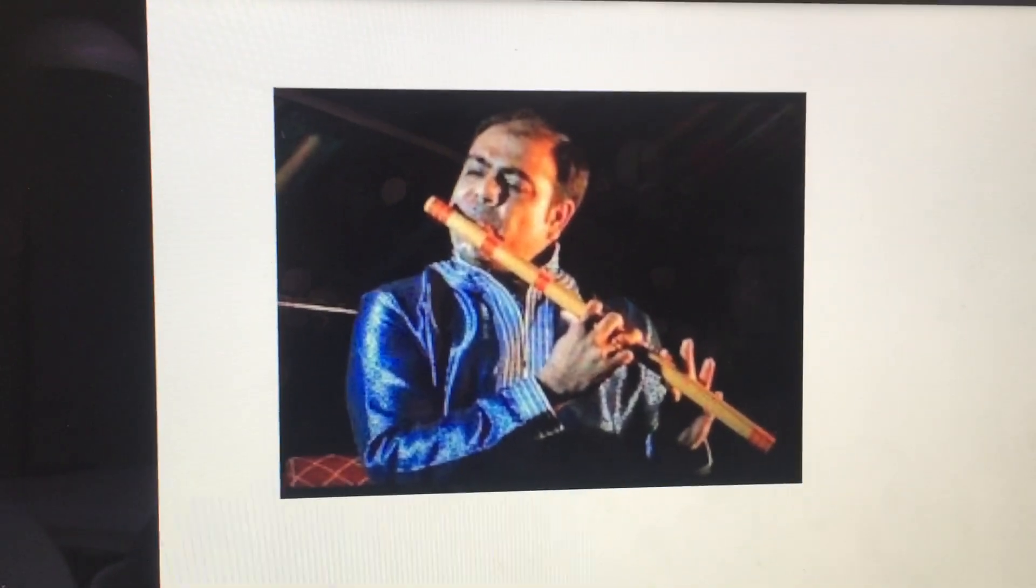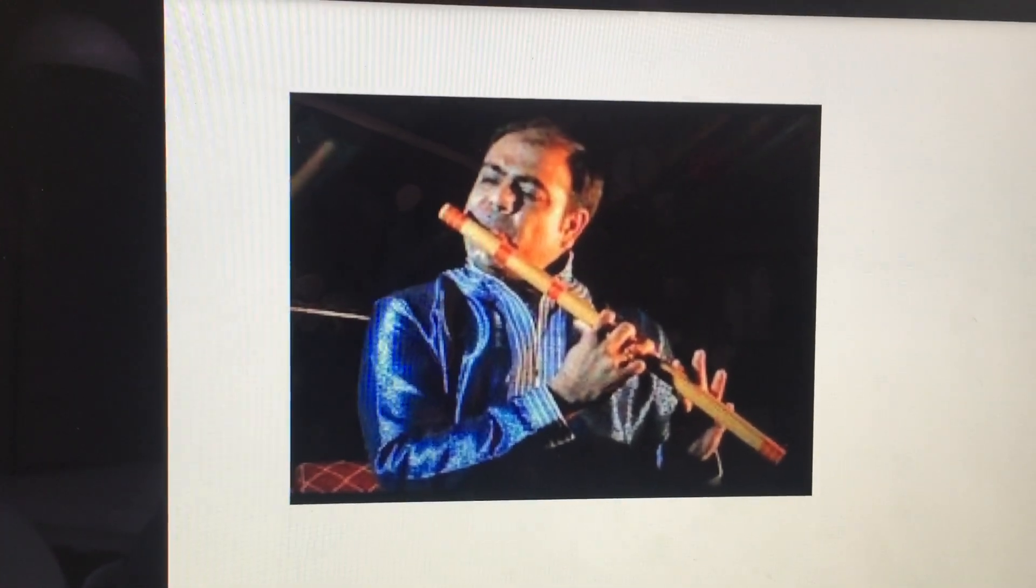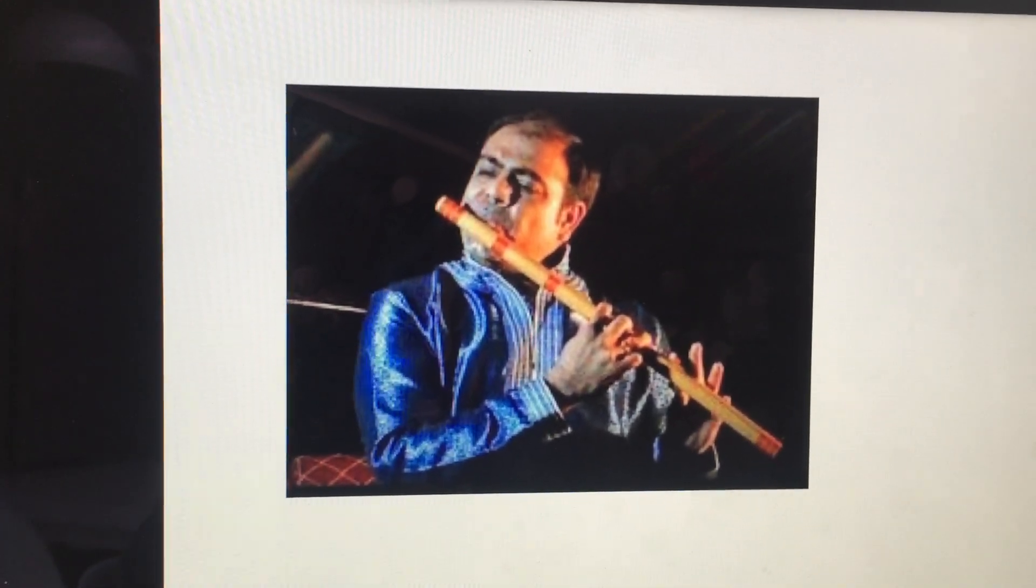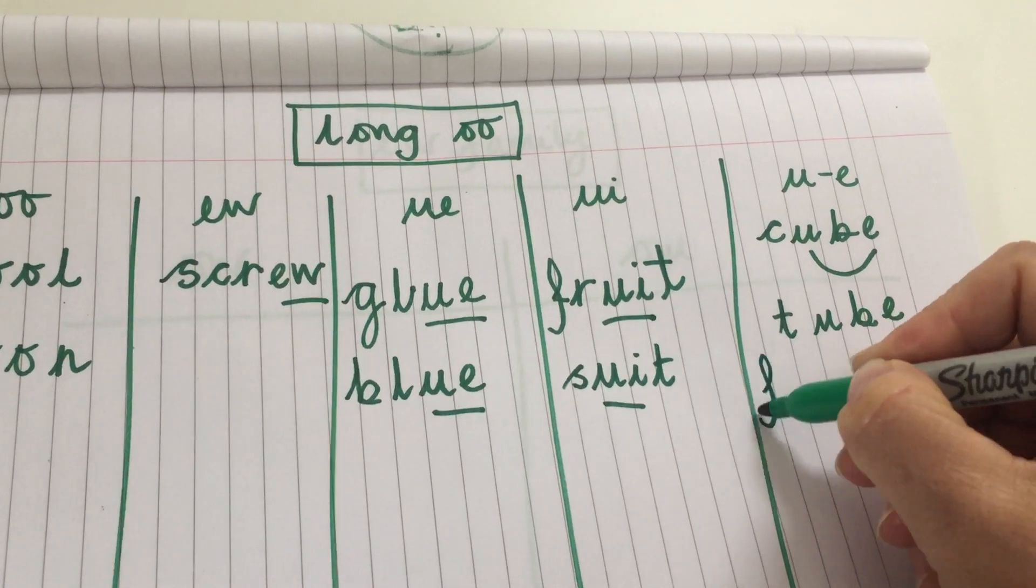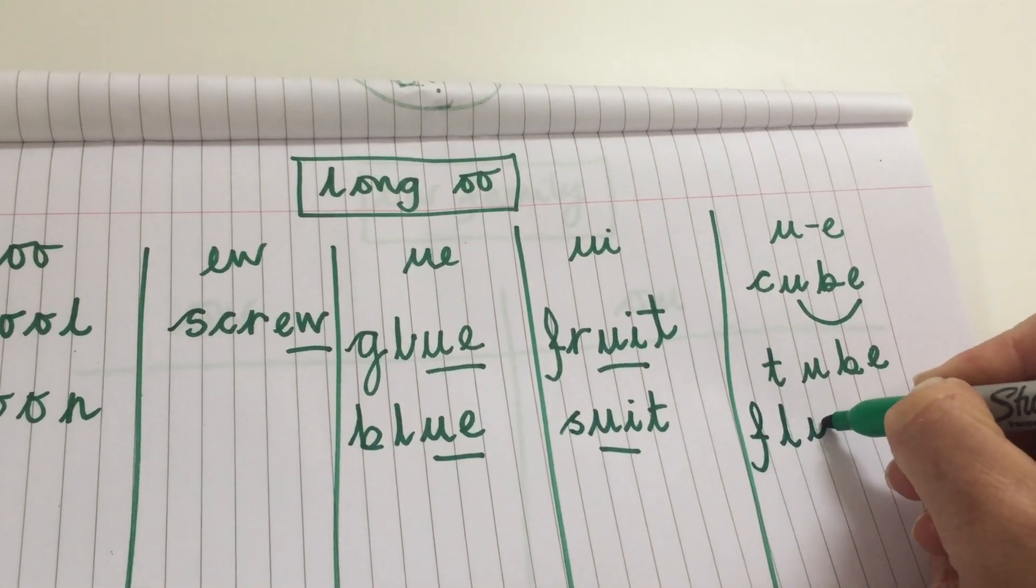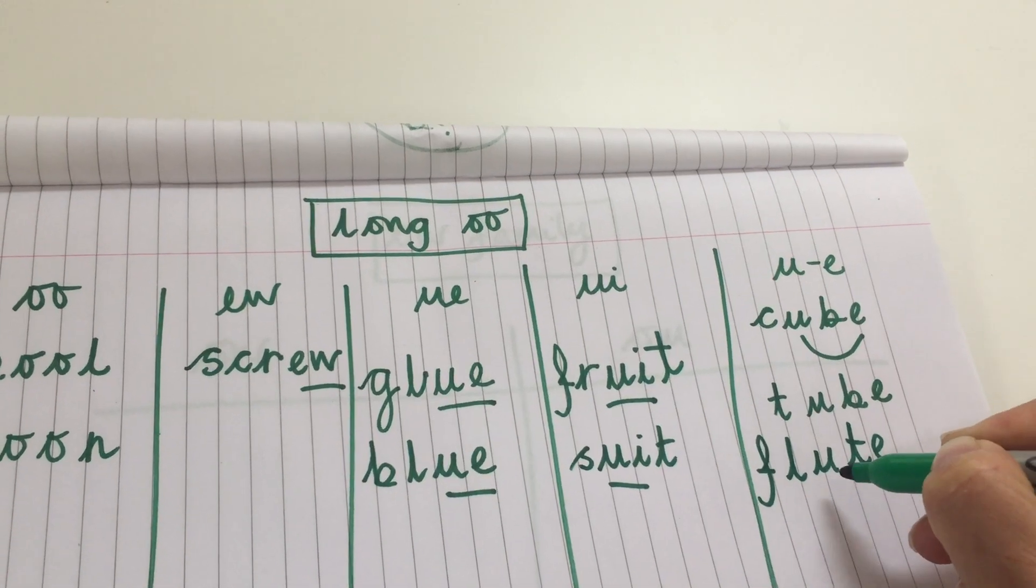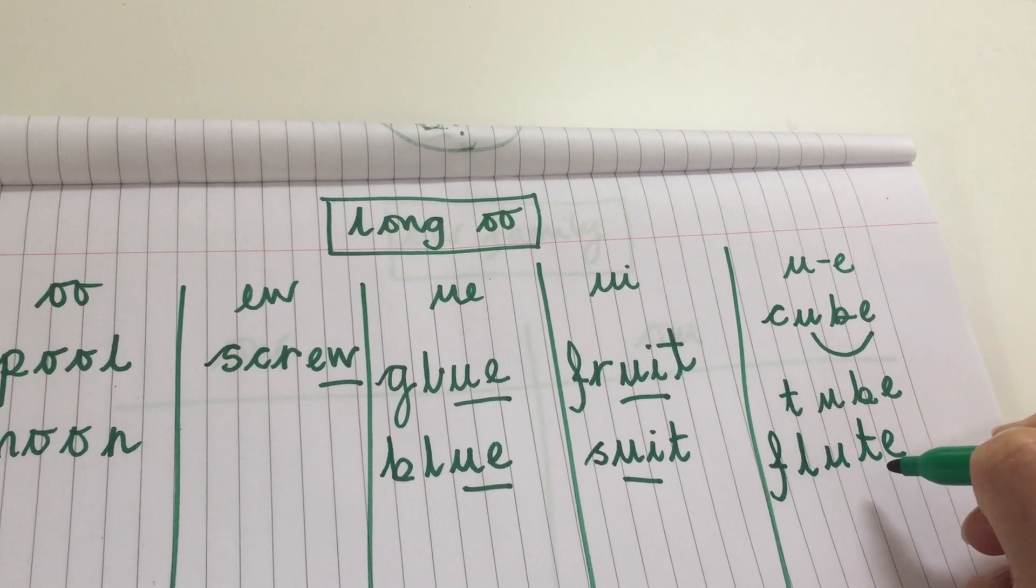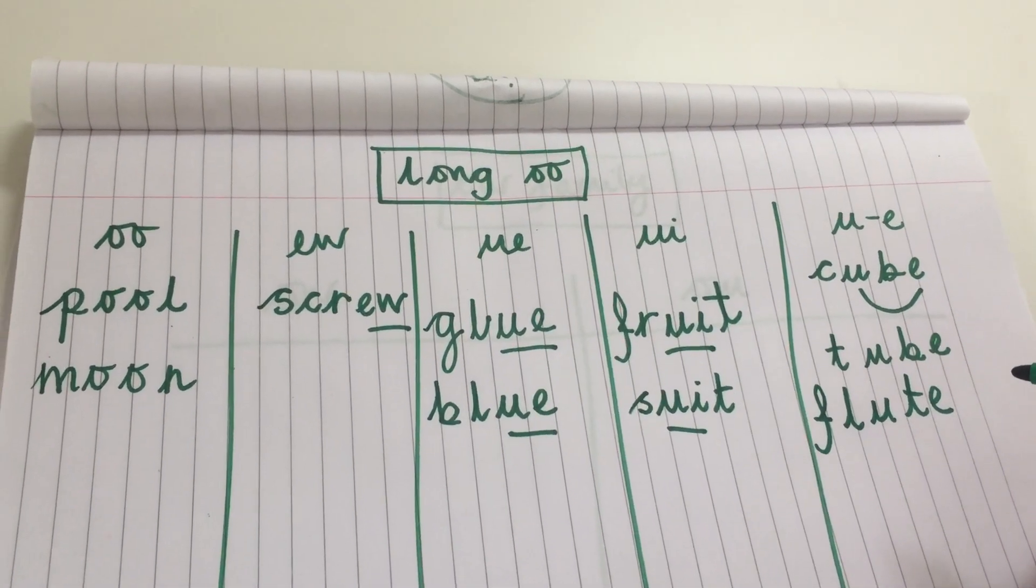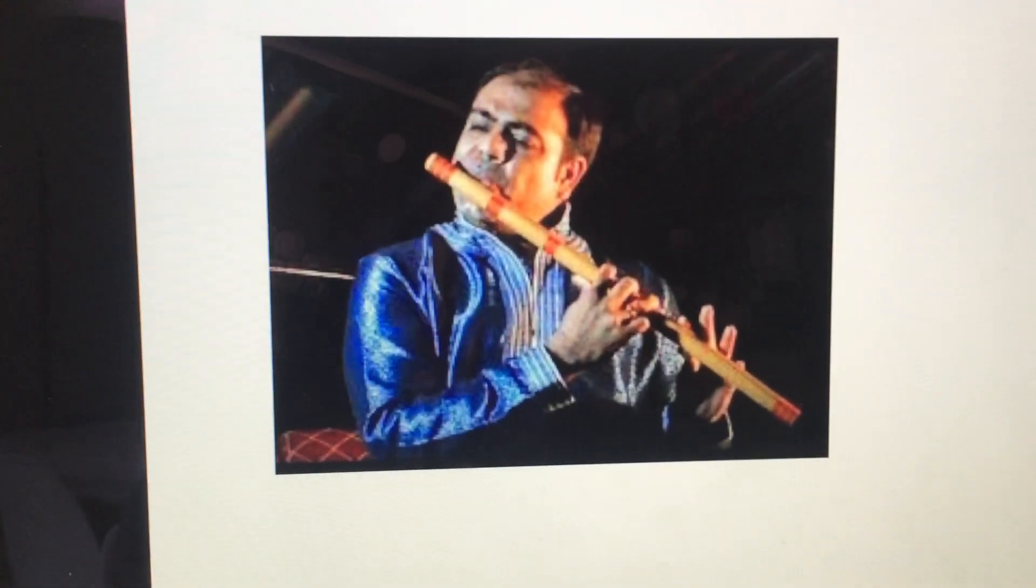Now this man here, he's playing an Indian flute. F, FL, oo, T. Flute. And the word flute is made by the split vowel digraph. Spelling. F, L, oo, T, E. And it's the silent E on the end that changes this U sound into the long oo sound. Flute. It's changing it into its vowel sound. Well done. It's the Indian flute.